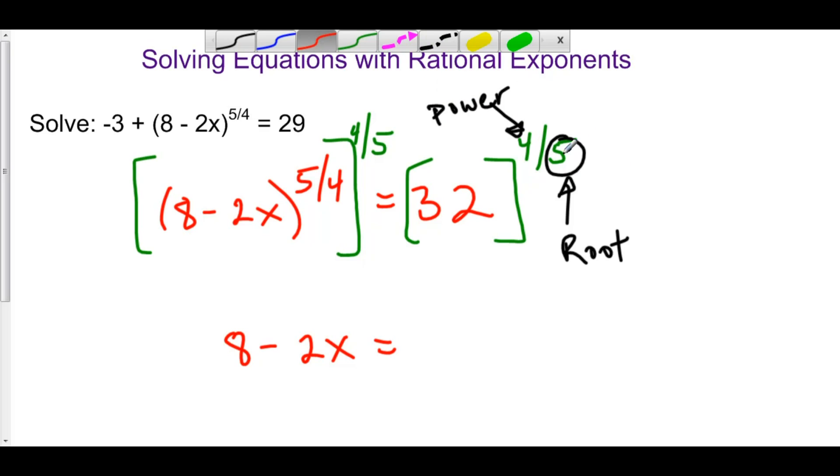So for example, here we have the fifth root of 32. This is the fifth root of 32 raised to the fourth power. That's what rational exponents mean.